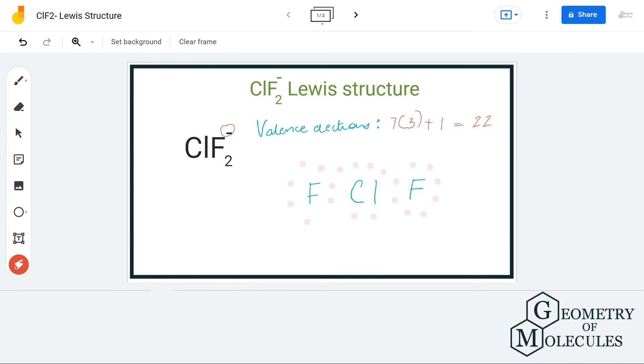Now if we calculate the formal charges, you will come across a charge of minus one on this chlorine atom, and that is fine because we have a minus charge over here. So this is the Lewis structure of ClF2 minus. Do not forget about putting brackets and mentioning charge because this is an ion.